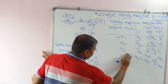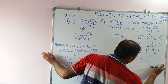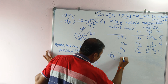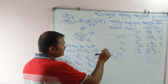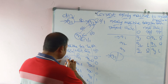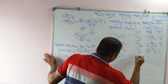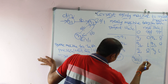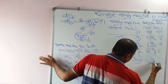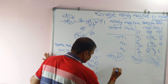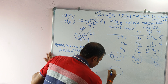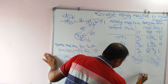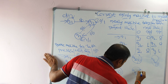Now let us draw the Moore machine transition diagram. The initial state is q1. In a Moore machine we write the output inside the state. q1 output is zero. Next we have q20 with output zero. Next we have q21 with output one. Next we have q30 with output zero. Next we have q31 with output one.